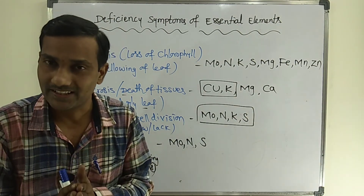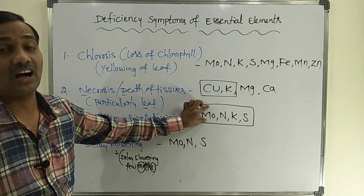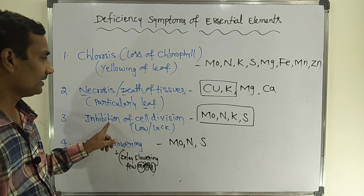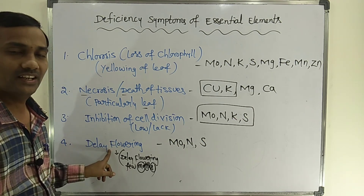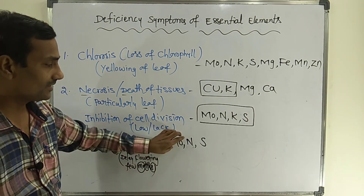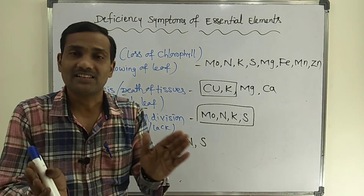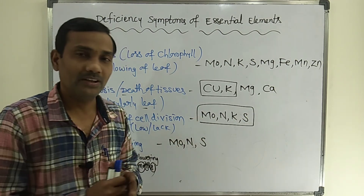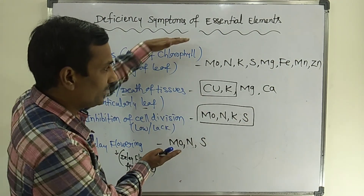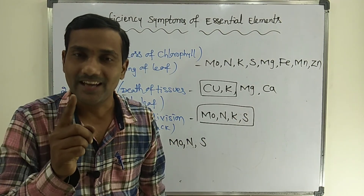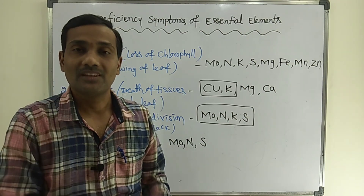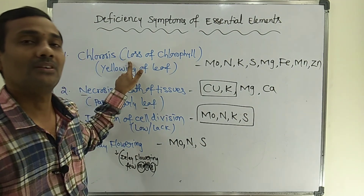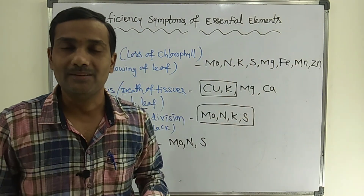From an exam point of view: if a question asks 'Molybdenum deficiency causes which of the following diseases?' with options A) chlorosis, B) inhibition of cell division, C) delay flowering, D) all of the above — the answer is D, all of the above, because molybdenum causes all three symptoms. The final conclusion: one mineral element may exhibit various deficiency symptoms, and one deficiency symptom may be caused by various different types of elements.